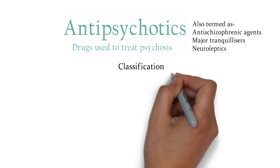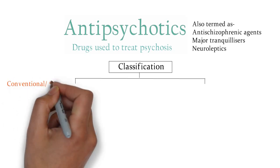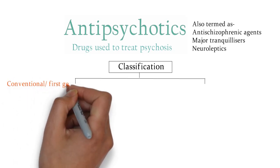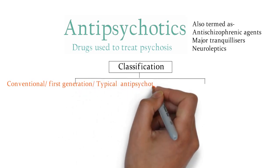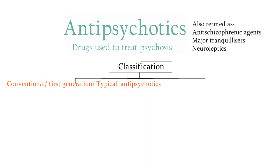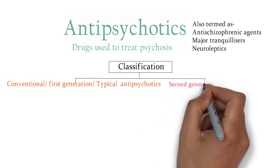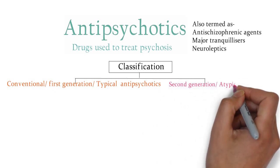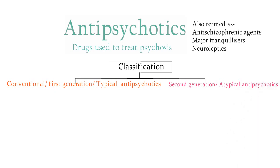Beginning with classification, the antipsychotics are divided into two broad categories. The first one is conventional antipsychotics, or first generation antipsychotics, also called typical antipsychotics. The second category is second generation antipsychotics, also called atypical antipsychotics. We will be using the terms typical and atypical.